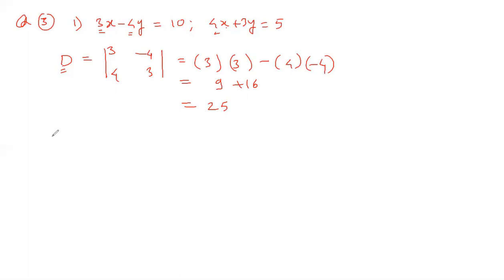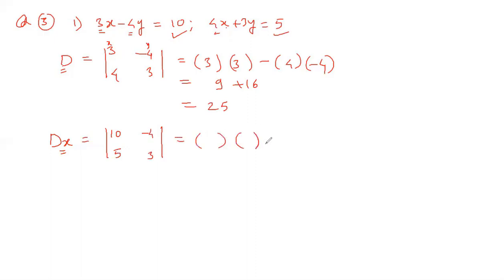Now we find Dx. In Cramer's rule, instead of x coefficients, we write the constants 10 and 5, while y coefficients minus 4 and 3 remain as they are. Solving by cross multiplication: 10 times 3 is 30, minus minus plus gives 5 times 4 which is 20. So 30 plus 20 equals 50. That is the value of Dx.